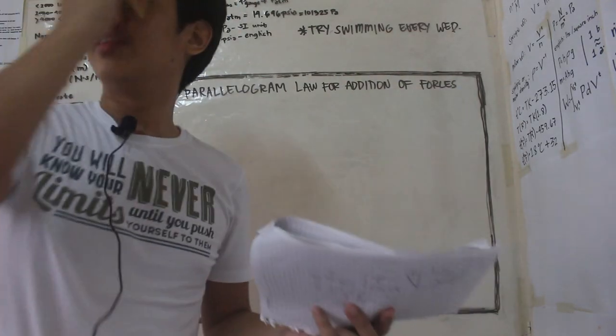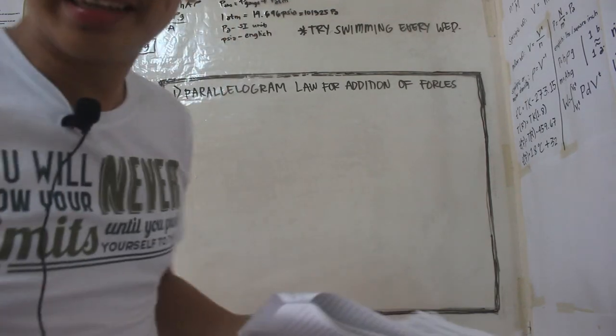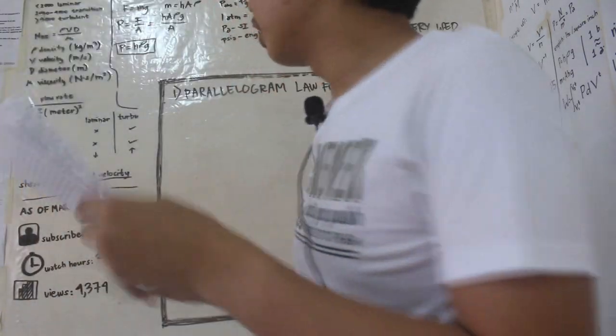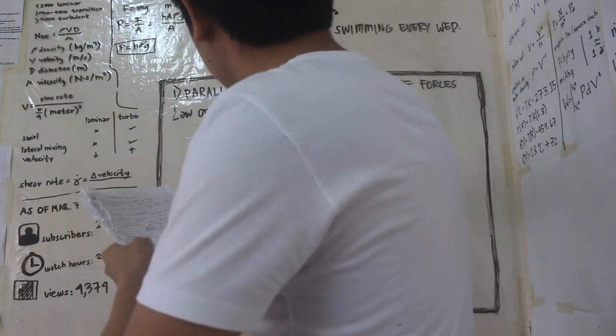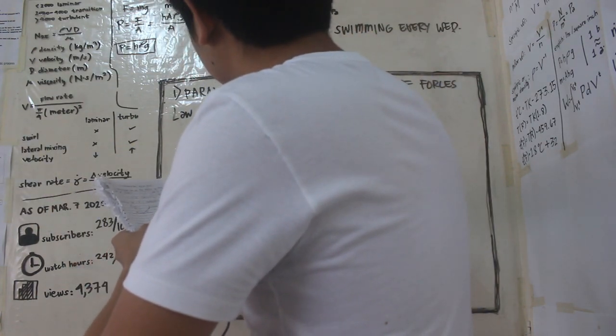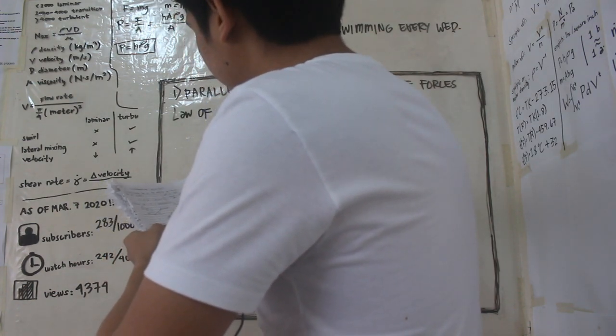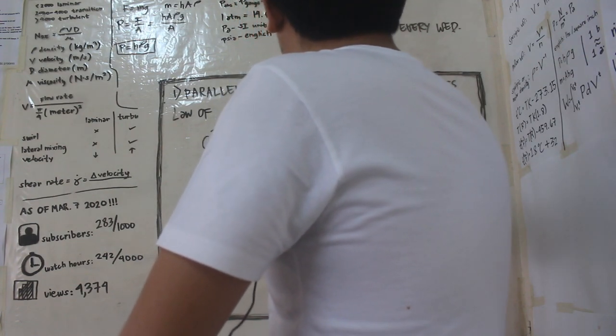So I guess alam nyo na to, but for everybody's sake, isulat na lang natin ang law of sines and law of cosines. So law of cosines, ito yung formula nya: c squared is equal to a squared plus b squared minus 2ab cosine theta.